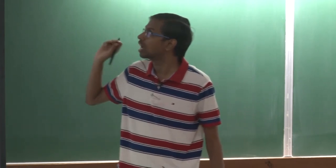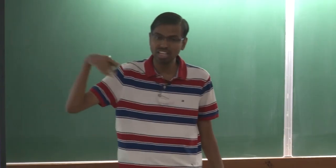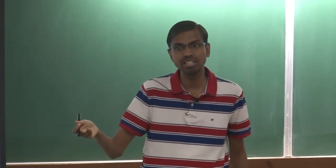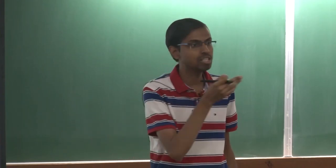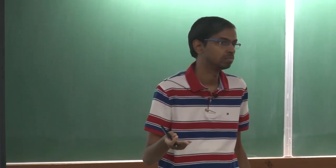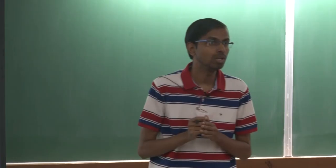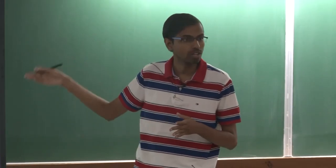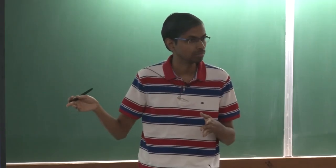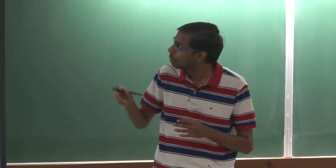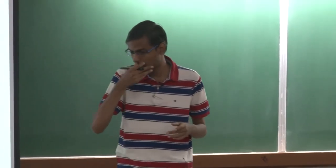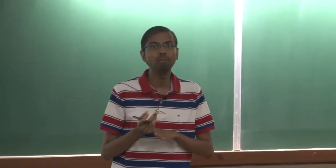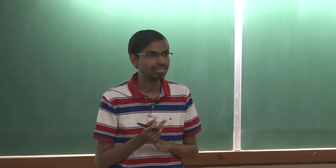Okay. So completeness theorem version 1, the version 2 would be that if T is a logical consequence of S, then there is a proof of T from S. So that is very easy to conclude from here. Now, this particular proof, before I begin with the proof, there is one important remark here.